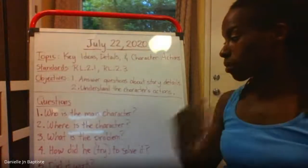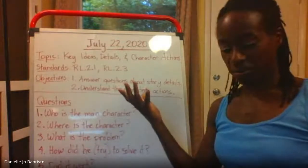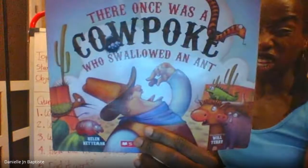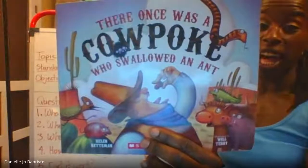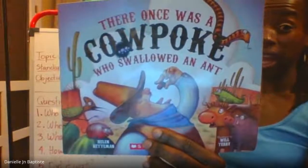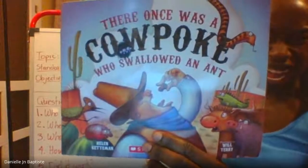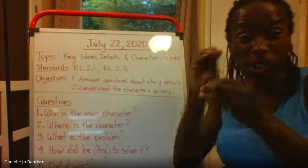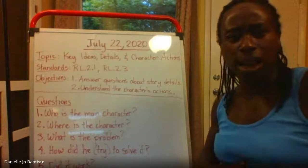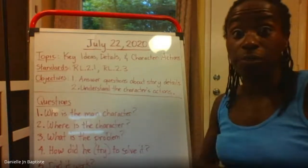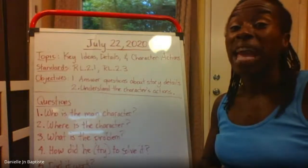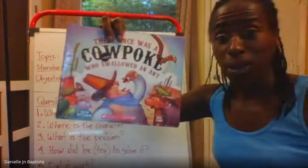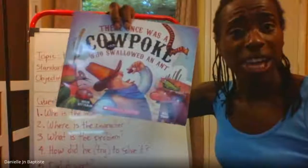All right, number three — what is the problem? Let's take a look at the cover and even the title: 'There once was a cowpoke who swallowed an ant.' The ant was the problem because it was stinging his stomach — biting his stomach — and making him pant. So the problem was he swallowed an ant that was stinging his stomach and making him pant.